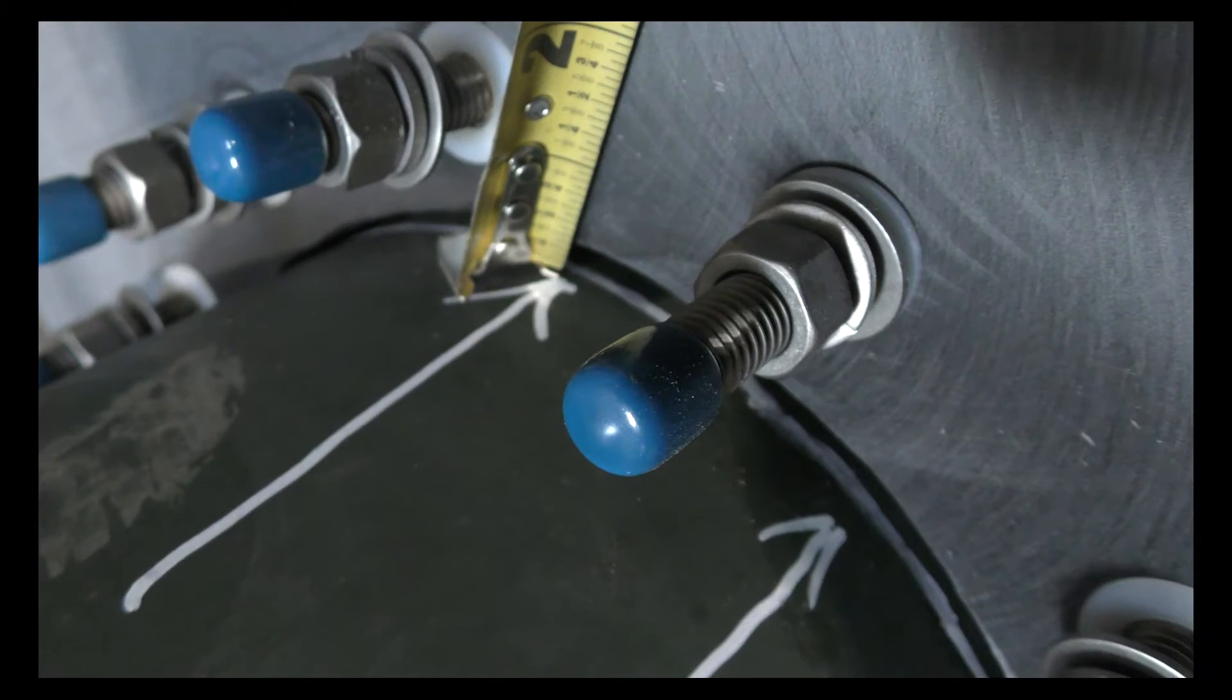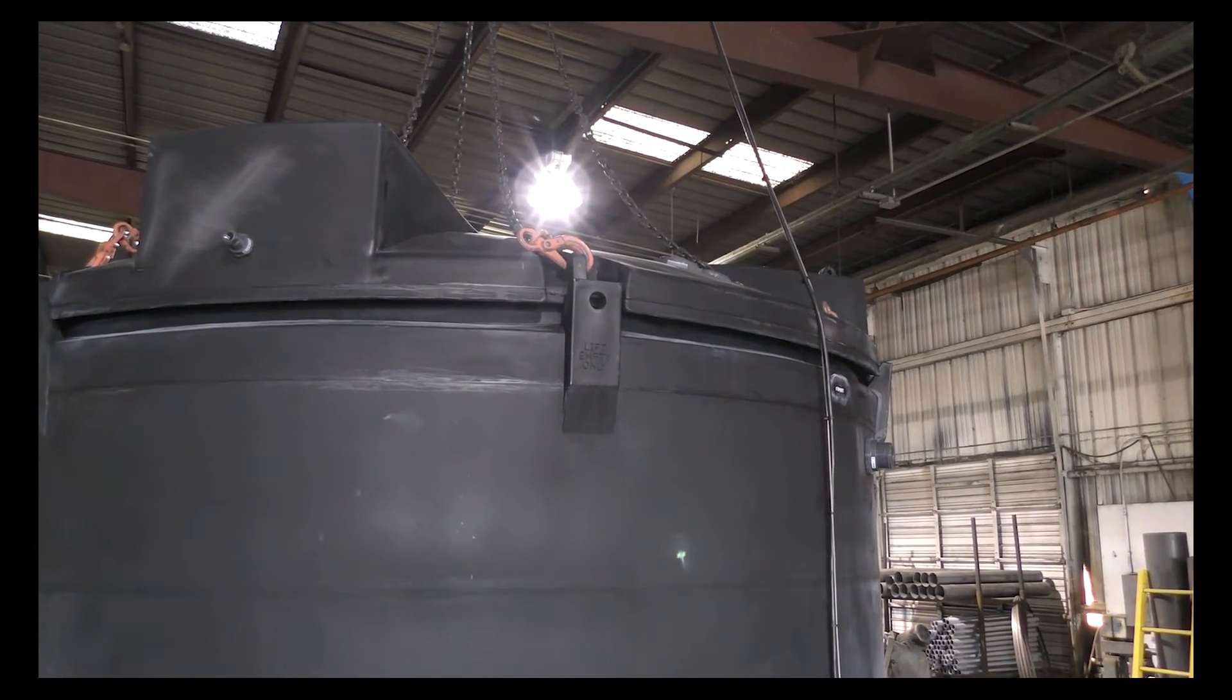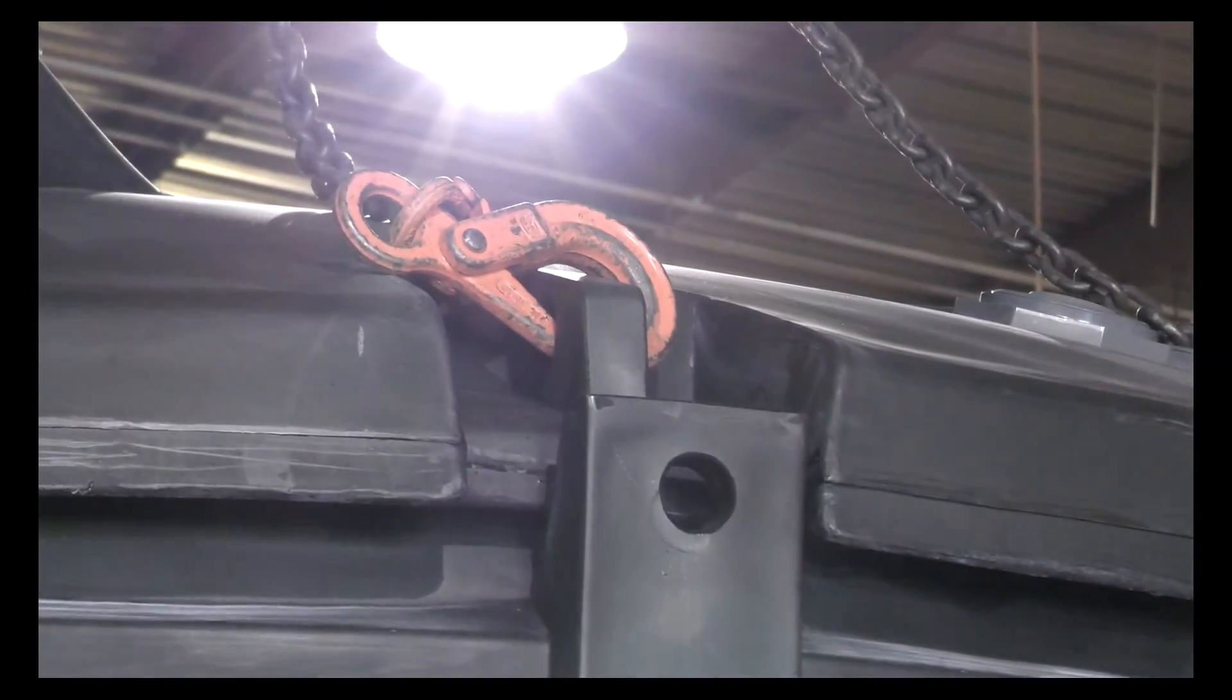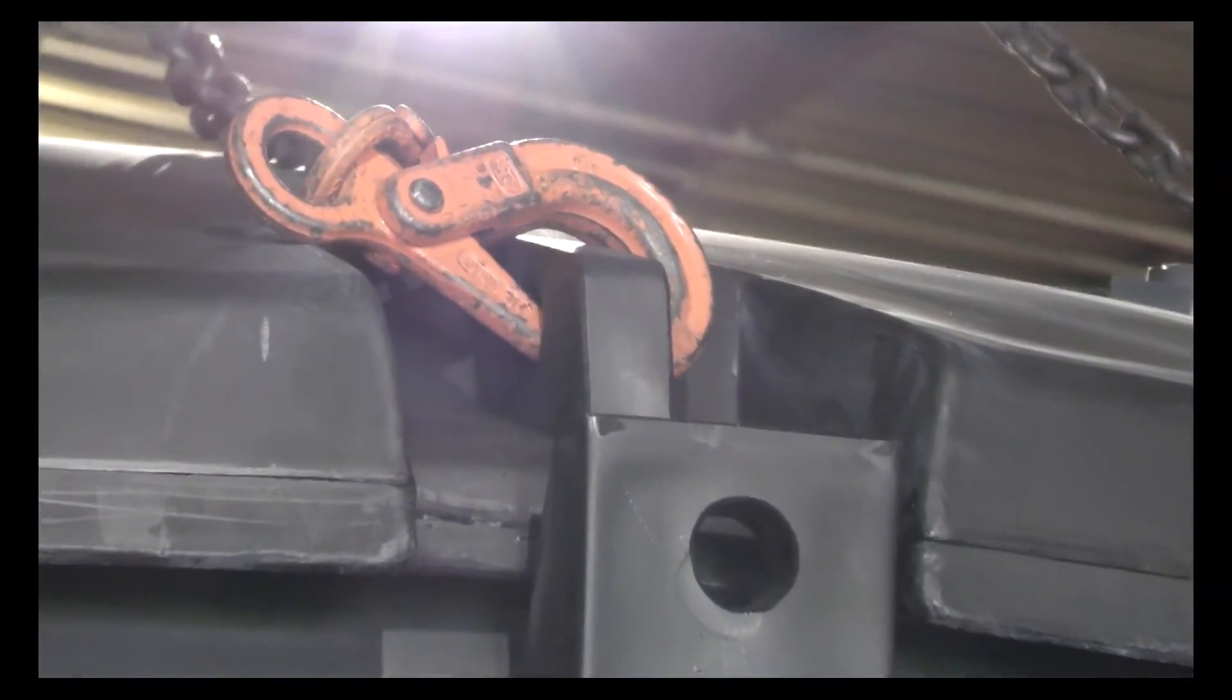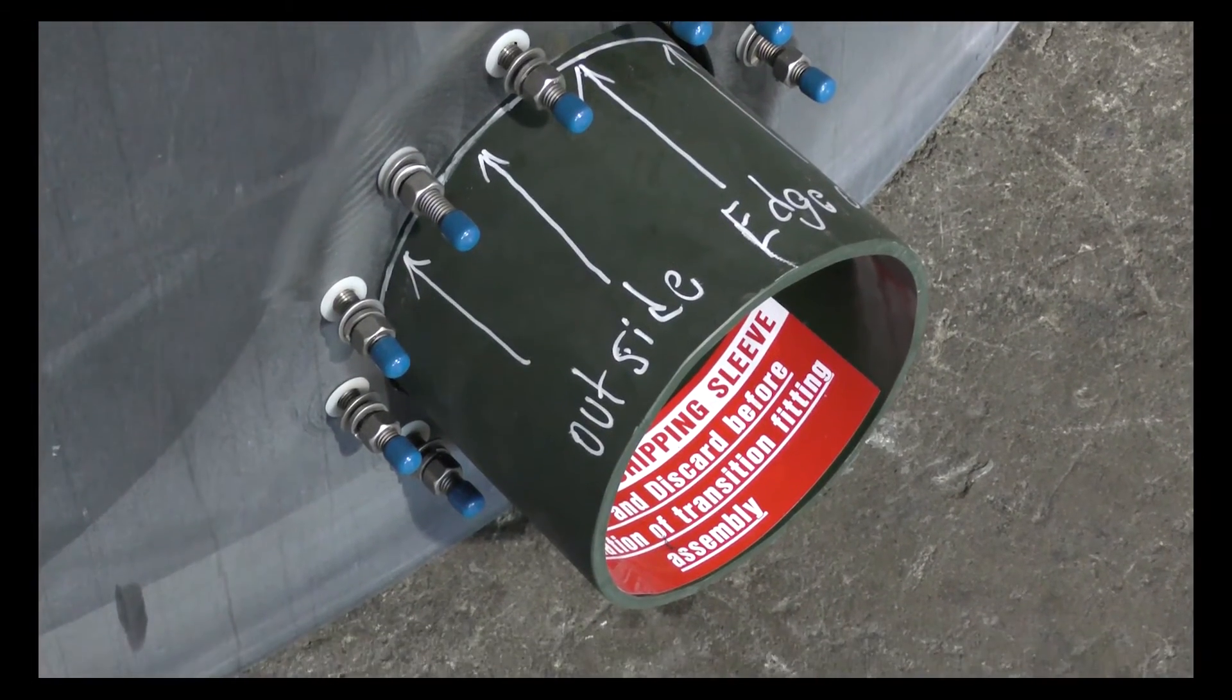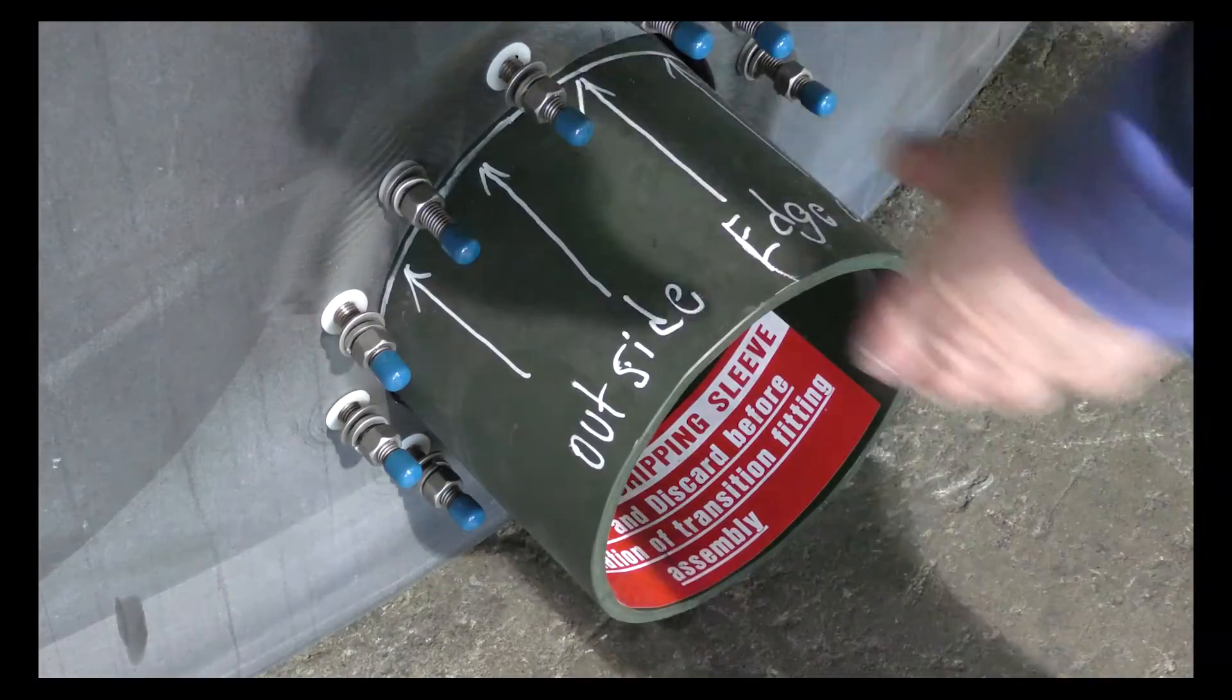If adjustments are needed to the bellows transition fitting, connect your crane or boom truck to the lifting lugs on the primary tank. Lift up on the primary tank slightly, just enough to free up the alignment sleeve for adjustment.